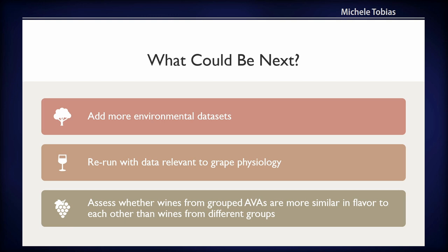You might also want to look at datasets that are more interesting to grape physiology, rather than sticking with the definitions TTB uses for AVAs around climate, soil, and elevation. That doesn't necessarily relate to how the grapes are going to grow. So you might look at things like solar radiation and the slope angle the grapes are growing on, doing this analysis more from the grapevine perspective than the legal definition perspective.